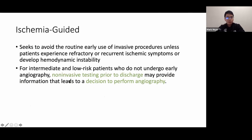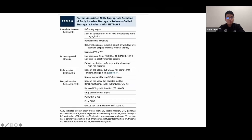A delayed invasive strategy (cath at 25–72 hours) allows plaque stabilization with antithrombotic and anti-ischemic therapies before the procedure. For ischemia-guided strategy, non-invasive testing prior to discharge informs whether angiography is warranted. Per 2014 ACC/AHA: immediate invasive for refractory angina, hemodynamic instability, heart failure, or sustained VT/VF; early invasive within 24 hours for GRACE >140 or new ST depression; low TIMI or GRACE scores may continue ischemia-guided management.